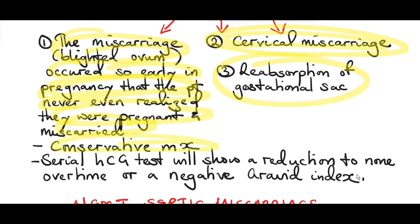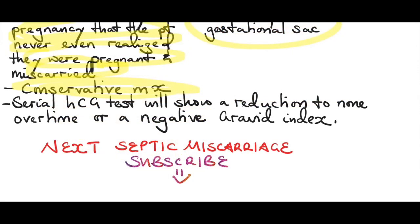So how do you manage this atypical presentation of a blighted ovum? It's simple — conservative management. You don't do anything. However, you do a serial HCG test, which will show a reduction over time and eventually become negative. This comes to the end of our discussion on a blighted ovum. In the next video I'm going to discuss septic miscarriage. Kindly don't forget to subscribe. Thank you.